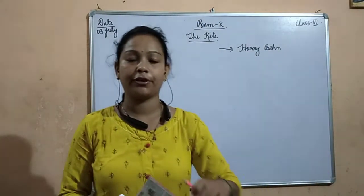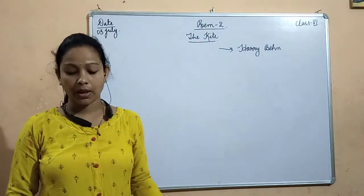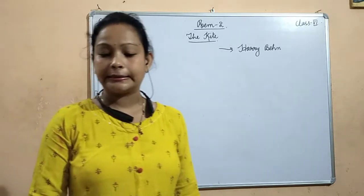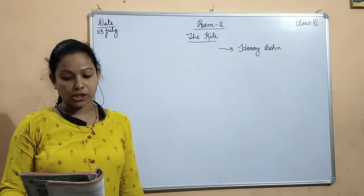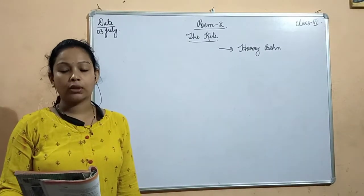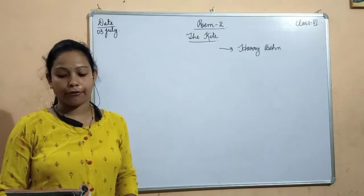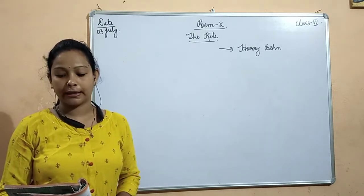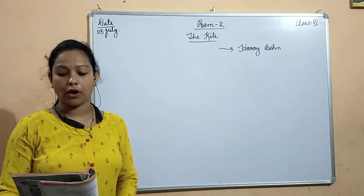I am reading the poem loudly for you all and you have to look at your books. How bright on a blue is a kite when it's new, with a dive and a dip it snaps its tail, then soars like a ship with only a sail, as over tides of wind it rides, climbs to the crest of the gust and pulls.